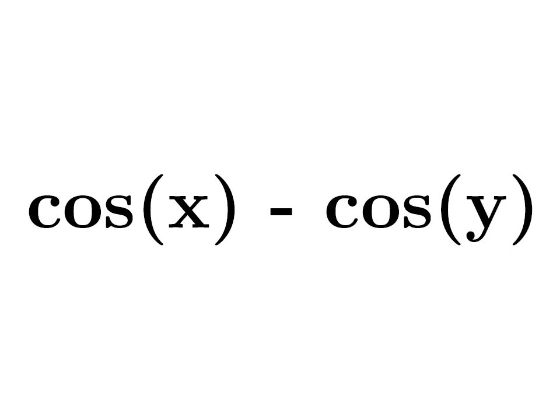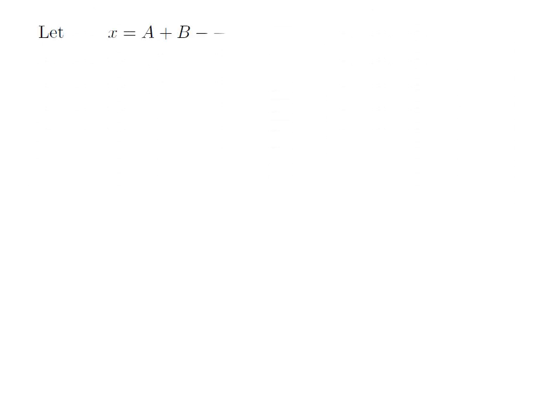In this video, we are going to learn how to derive the identity for cosine of x minus cosine of y. Let x be equal to a plus b and y be equal to a minus b, where a and b are real numbers. Let's give the numbers 1 and 2 to these two expressions respectively.